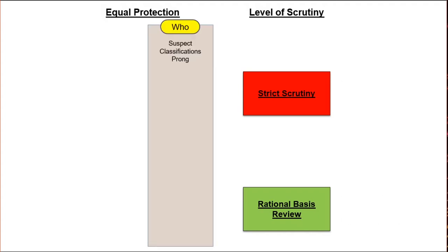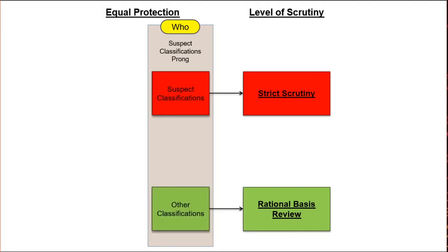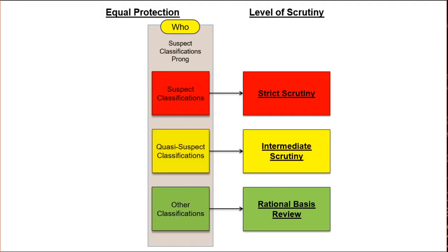The suspect classifications prong asks who is affected by the unequal distribution. In this prong, some classifications are suspect, getting strict scrutiny. Others are not suspect, and they get rational basis review. Today's law actually recognizes a third level of scrutiny known as intermediate scrutiny, but we'll come back to that later.